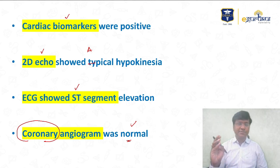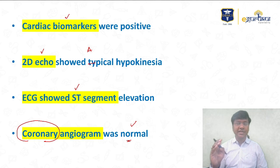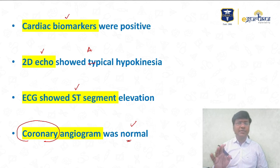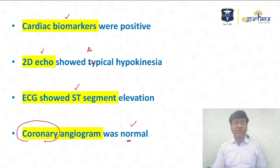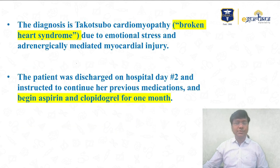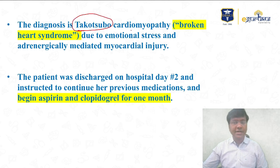With a background history of chest pain, hypertension, dyslipidemia, positive cardiac biomarkers, 2D echo showing apical hypokinesia, and ECG showing ST segment elevation — all of this would suggest coronary artery disease. But surprisingly, the coronary angiogram was normal. So what is my diagnosis? This patient does not have coronary artery disease. The patient has Takotsubo cardiomyopathy.